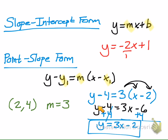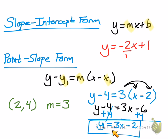If you're ever given a point and a slope, you can use point-slope form to put it into slope-intercept form, because slope-intercept form is much better for graphing. You'd just go to negative 2 on the y-axis, then go up 3 and to the right one.